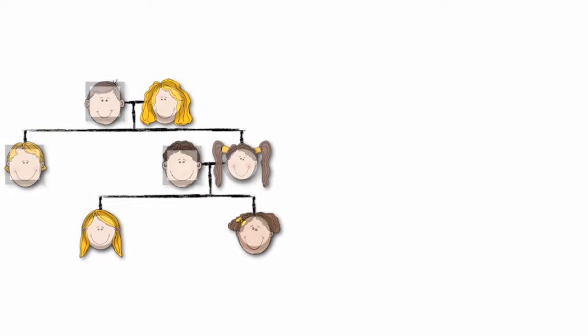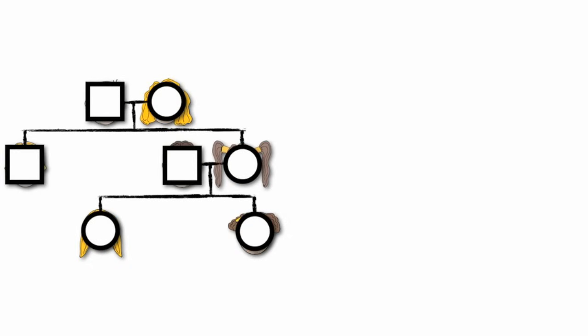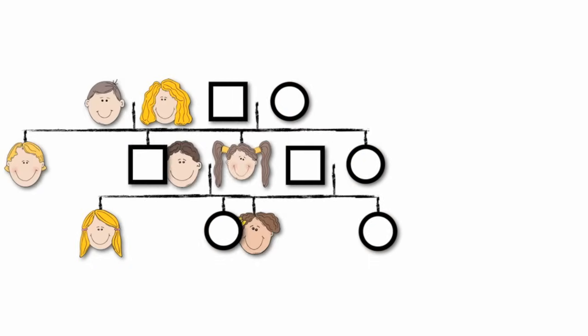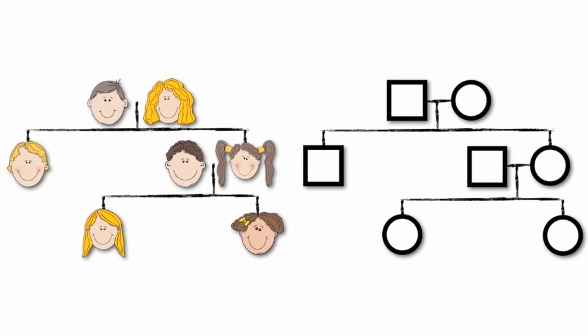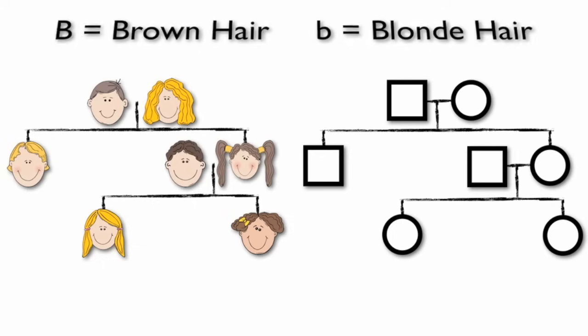Here's our family tree next to a pedigree. Together we can work to fill this out. The trait that we're looking at is brown hair. Brown hair is dominant to blonde hair. In our example, our male is heterozygous. His genes for hair color are big B little b.